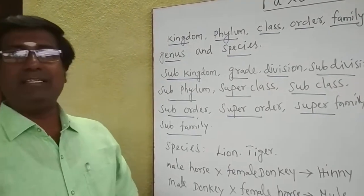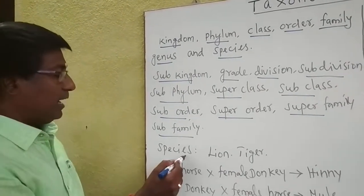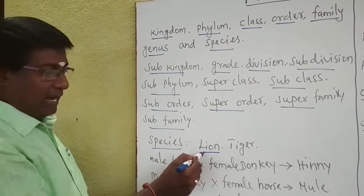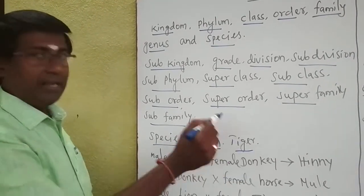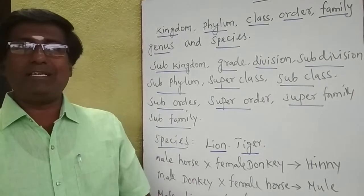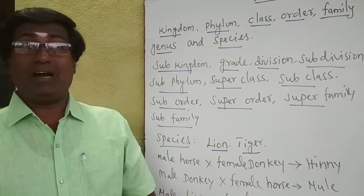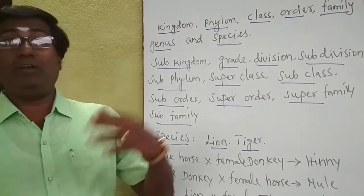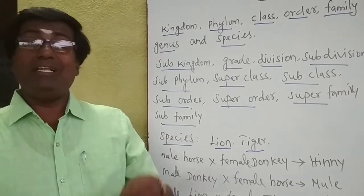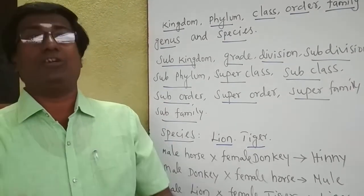Let us see the seven categories one by one. First, we see the species. I will give you two examples: lion and tiger. Species is nothing but a group of animals having similar characters, but they are reproductively isolated, mating within themselves only and producing fertile offspring.